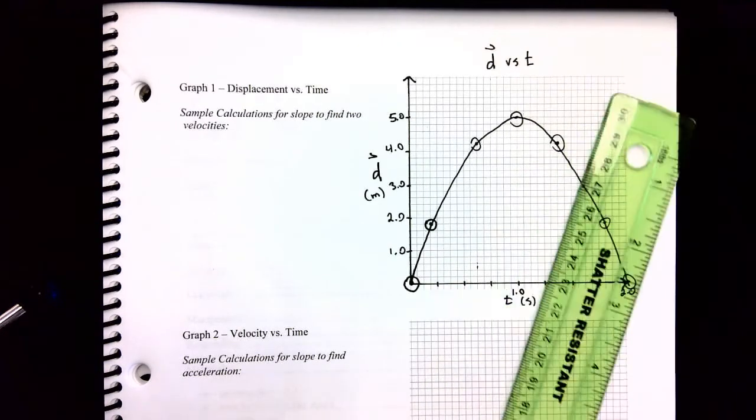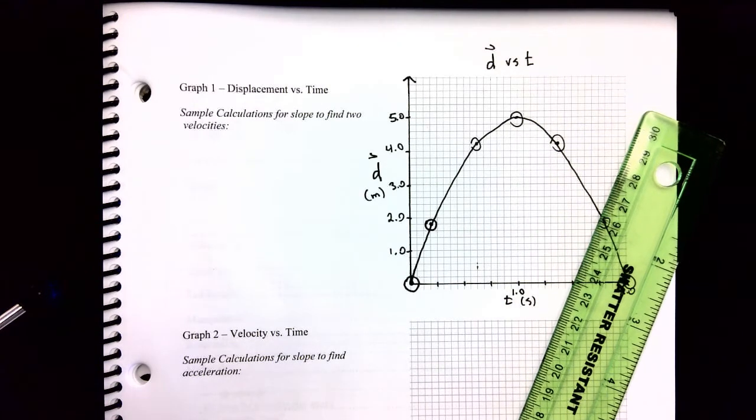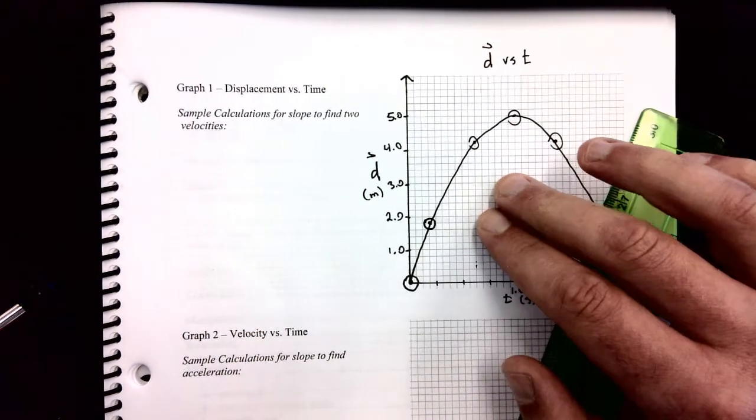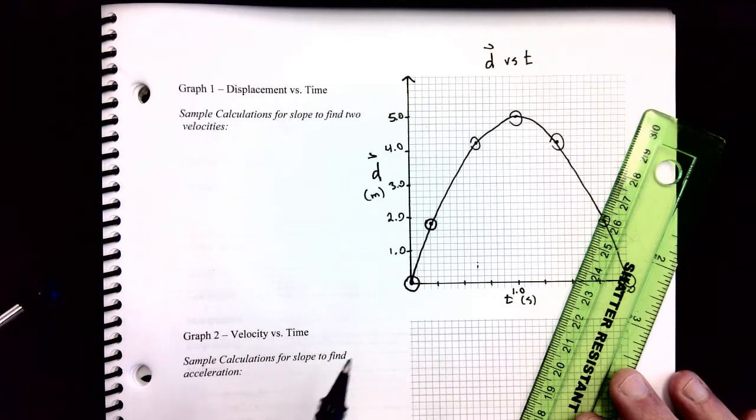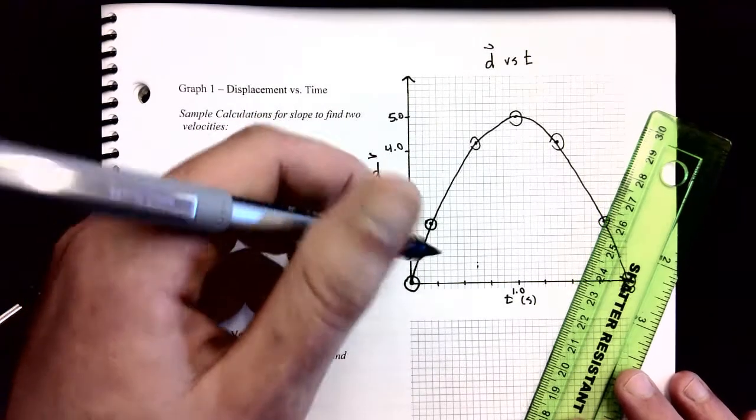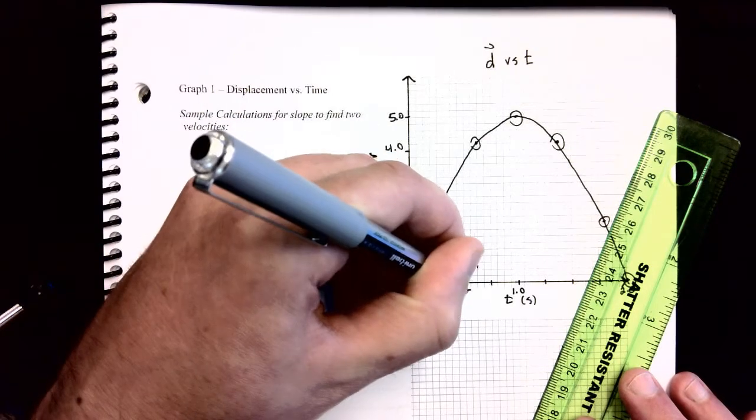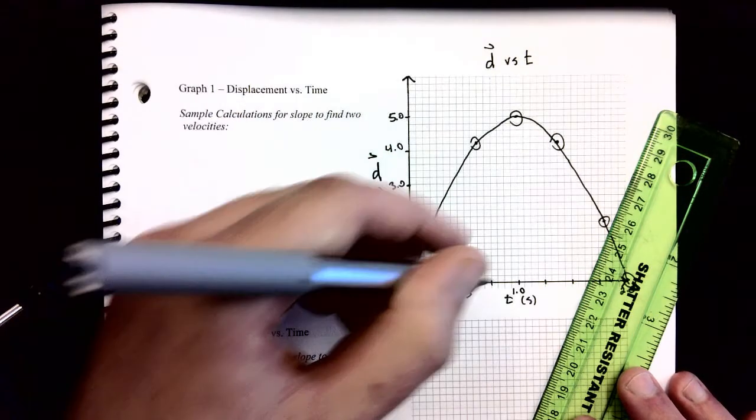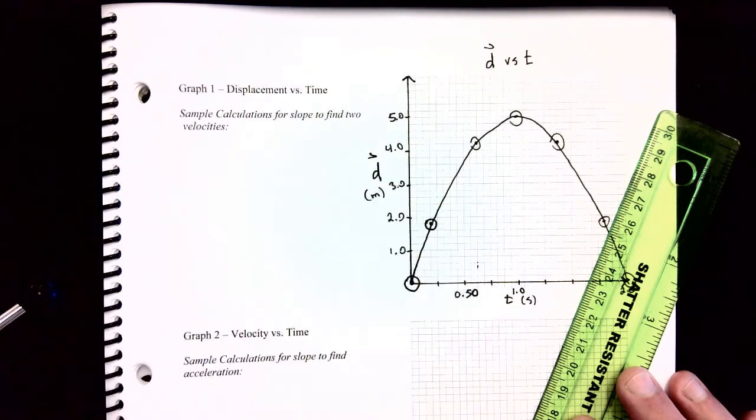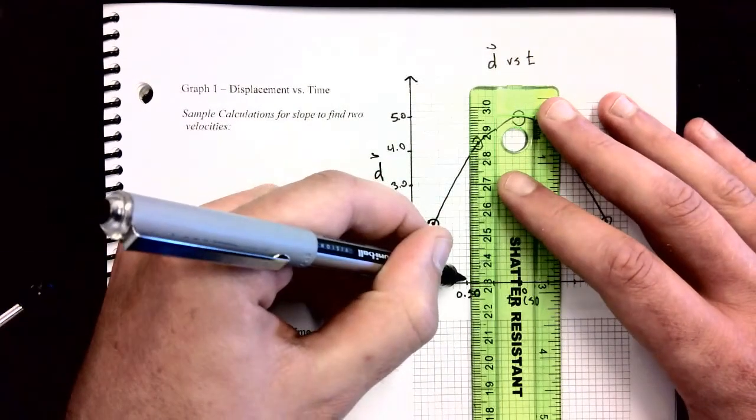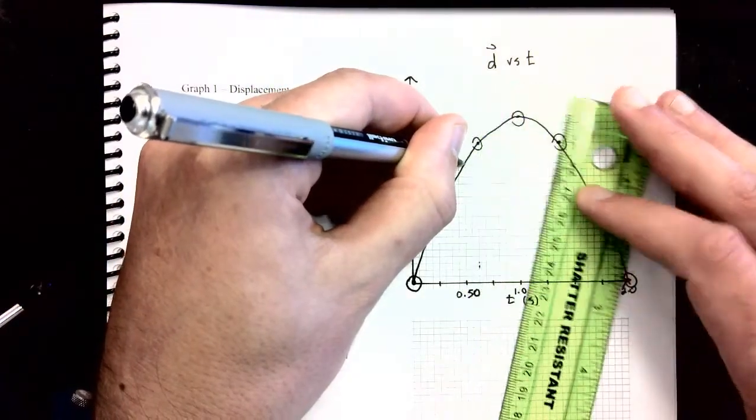So what I'm going to do to start off with is pick a point off my graph where I want to know the velocity. And I think I would like to know how fast this object is moving when it's at, I don't know, I'm going to go to 0.5 seconds. You can pick a different time, if you like, on your graph. So that 0.5 seconds is right here on my graph.